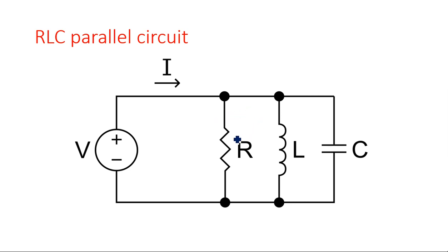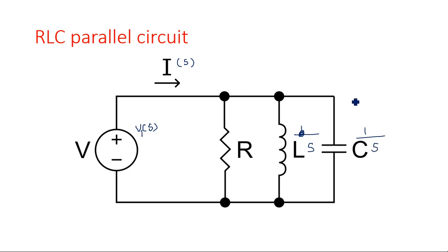Depending on the roots s1 and s2 we are going to say whether it is under damped, over damped, or critically damped. This is the RLC parallel circuit where the resistance, inductance, and capacitance are all in parallel with each other. This is the applied voltage across these three parallel components and this is the current flowing through this. Whenever this circuit is converted into its Laplace domain, it becomes V of s. R will not change since R is constant in any domain, L is frequency dependent so L converts to Ls, and C converts to 1 over Cs. Across these three we are taking the output V_out of s.